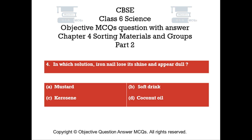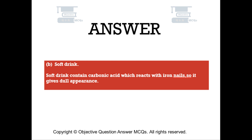Question number 4. In which solution does an iron nail lose its shine and appear dull? Option A: Mustard. Option B: Soft Drink. Option C: Kerosene. Option D: Coconut Oil. The right answer is Option B — Soft Drink. Soft drink contains carbonic acid which reacts with iron nails, giving them a dull appearance.